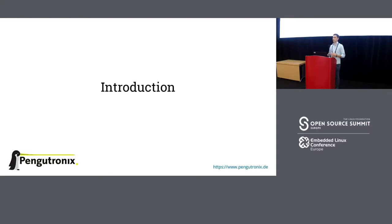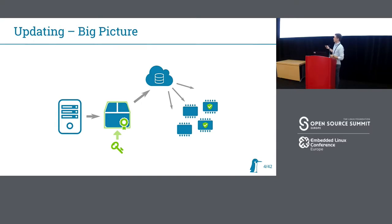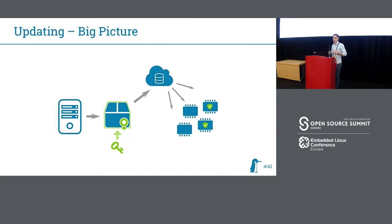A short introduction and general description of updating for those not familiar with it. From the overall perspective, we have an update system: a build server where we generate our images and artifacts to deploy later. Then we pack it into an update format where it's bundled, signed, and uploaded into a network or cloud. Then devices in the field download this update, either by polling or notification, and install it on each individual device.